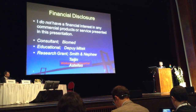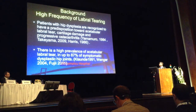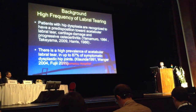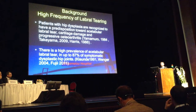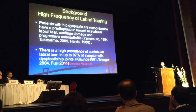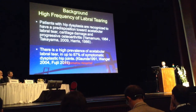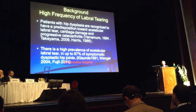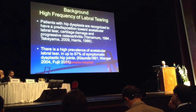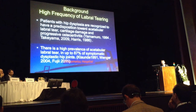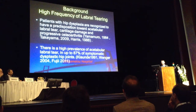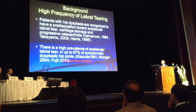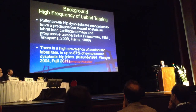Here is my dysplasia disclosure. Patients with hip dysplasia have a greatest predisposition toward acetabular labral tears, cartilage damage, and progressive osteoarthritis. There is a high prevalence of acetabular labral tears in up to 87% of symptomatic dysplastic hips.